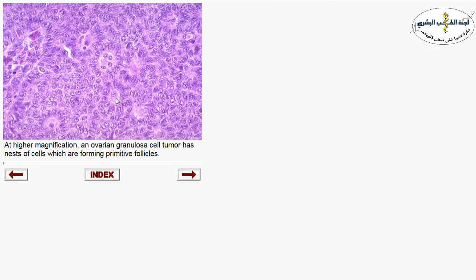Another stromal tumor of the ovary is the granulosa cell tumor, arising from the granulosa cell layer. It forms rosettes of Call-Exner bodies — roset-like structures resembling primitive follicles. The cells have a coffee bean appearance with a nuclear groove at the center. The granulosa cell tumor has two types: adult and juvenile.